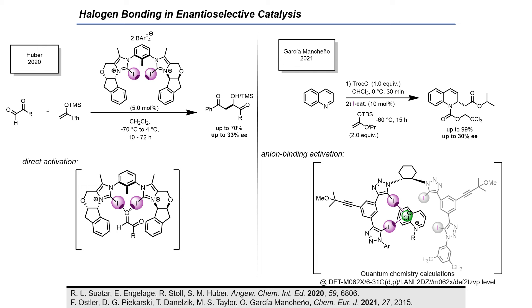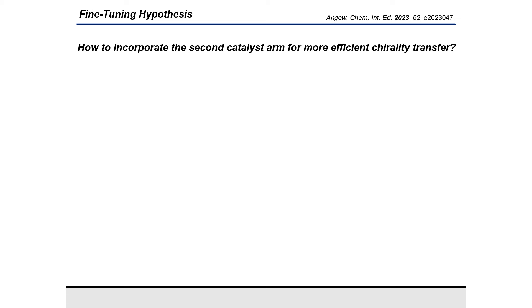In the activation mode picture, which is based on DFT calculations, you can see that only one catalyst arm is participating in the transition state and the second arm is turned away from the chloride. So the question arose: how to incorporate the second catalyst arm for more efficient chirality transfer. And with this, I am coming to our fine-tuning hypothesis.